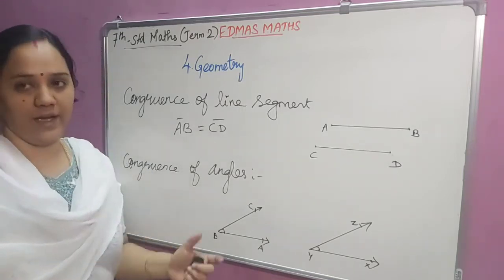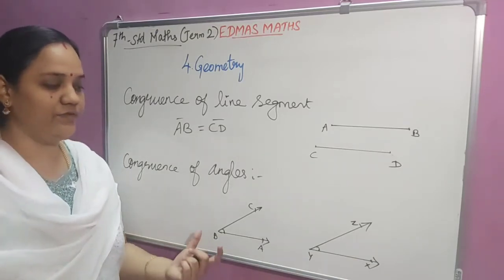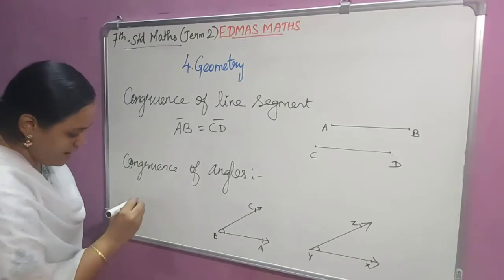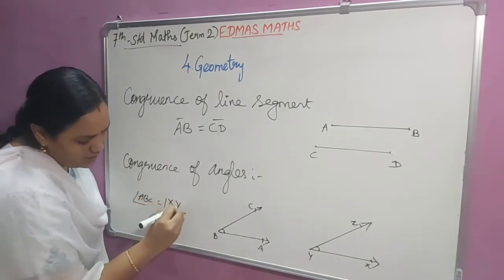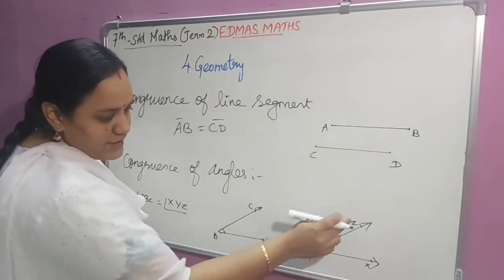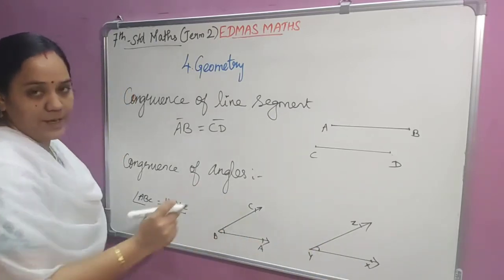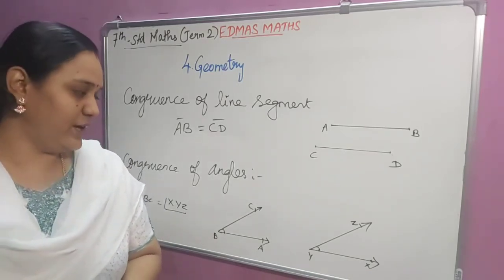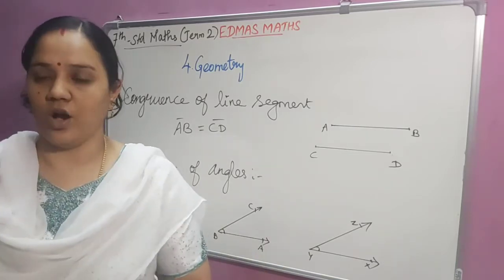Next is congruence of angles. If two angles are given and we say these two angles are congruent, it means angle ABC should be equal to angle XYZ. These two angles are equal — then only we can say these two angles are congruent.